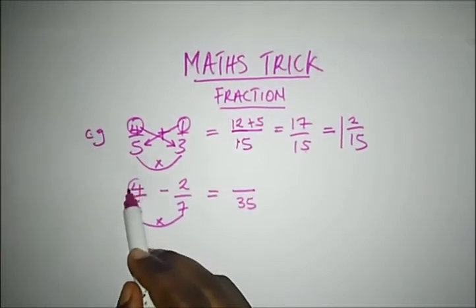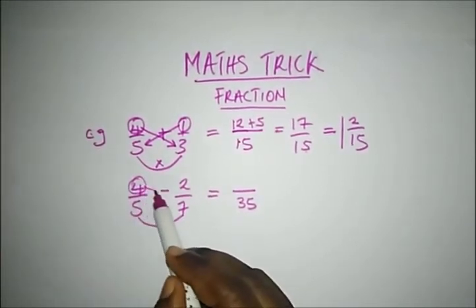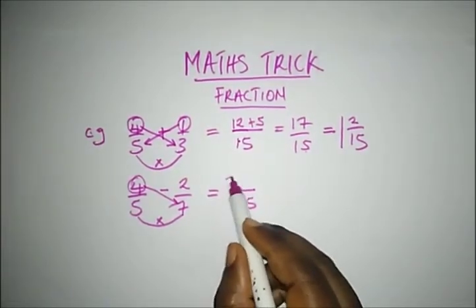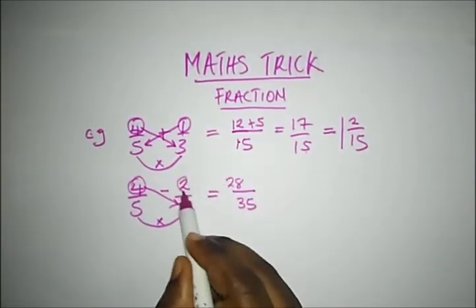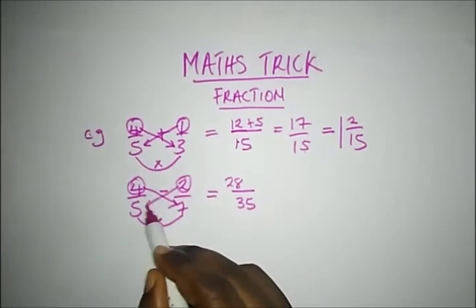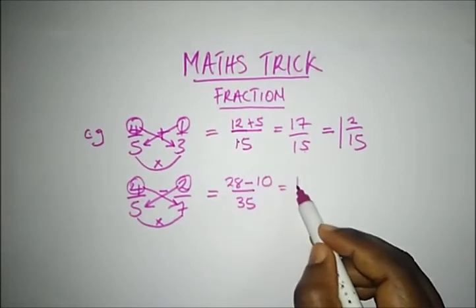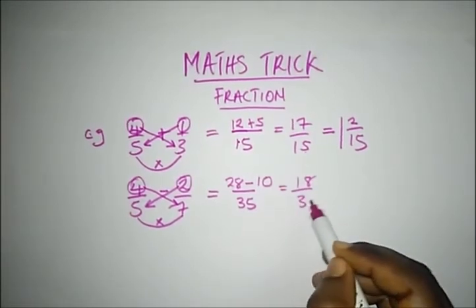Here we'll go to our left hand side and multiply 4 and 7. What's 4 times 7? That's 28. We'll come here to 2 times 5, which will be minus 10. So what's 28 minus 10? That's 18 over 35.